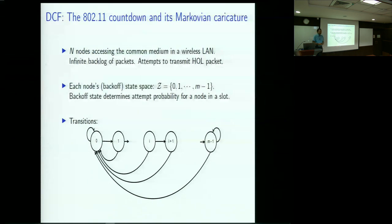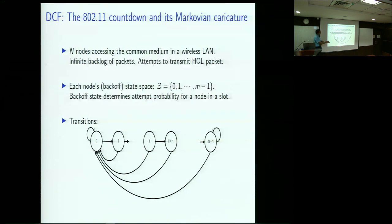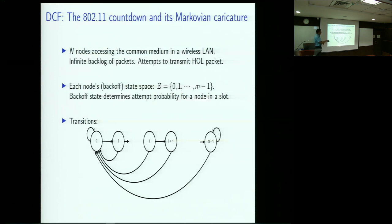If we are at state i and it succeeds in its attempt, that packet is out of the system, the next packet comes and so the node moves back to state 0. The state indicates the number of attempts made for transmission as far as the head-of-line packet is concerned. At state m-1, you keep attempting until you succeed — there are many variations possible, but we'll stick to this particular variation.